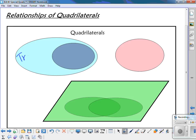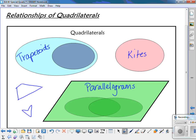We have trapezoids. We have kites. And we have parallelograms. And then if it's not any of those, if it's just a random quadrilateral, it would be outside of those figures.